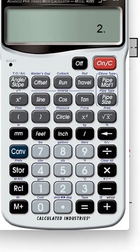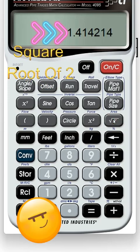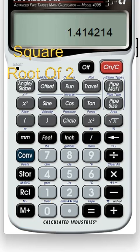1² + 1² equals 2. So the square root of 2 equals 1.414. That's where that number comes from. 1.414 is the square root of 2.